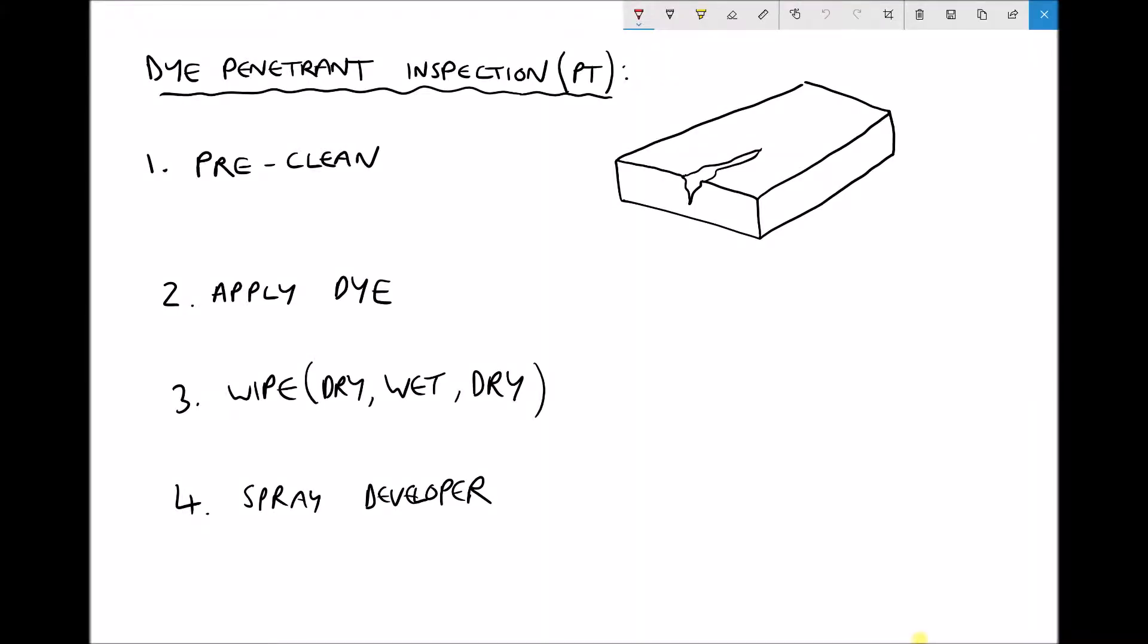In this video we're going to be discussing a non-destructive inspection method known as dye penetrant inspection. This testing method can be used to identify surface defects and cracks in a given component or material. It's important to note that this can only be used to identify defects on the surface of the component.